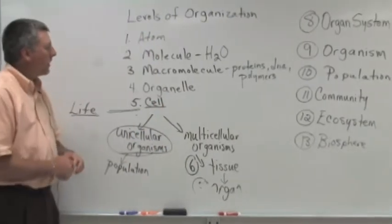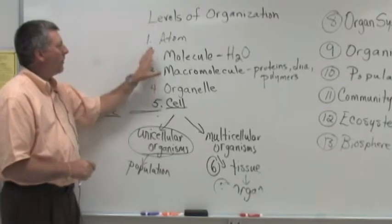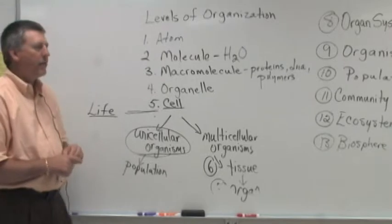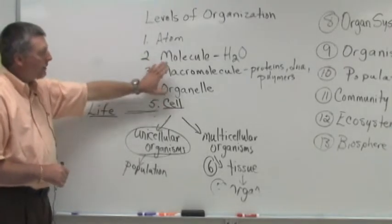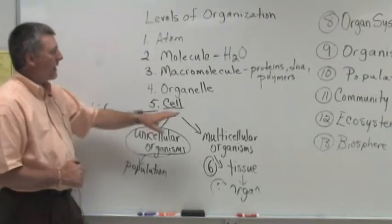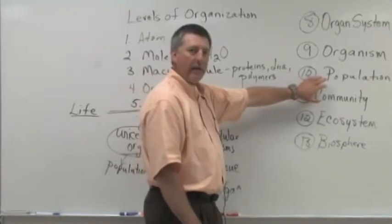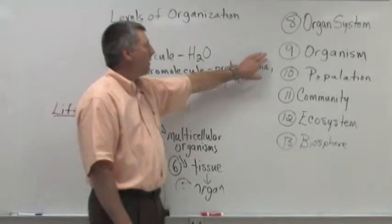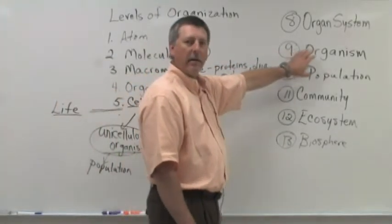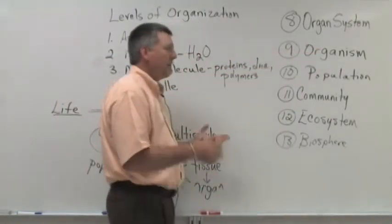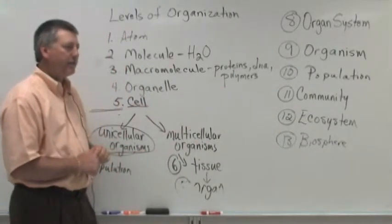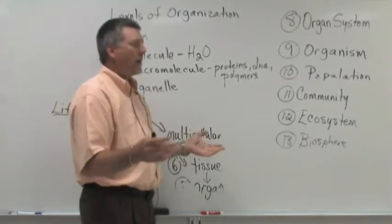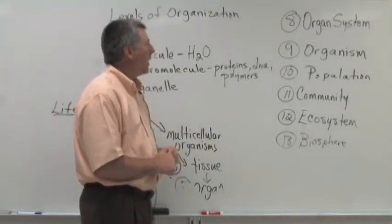So, levels of organization. We've gone from the smallest to the largest. There are different kinds of people that study life at many different levels. For example, there are population ecologists that are interested in studying populations. There are people that spend their entire life studying a particular organism. Maybe someone is studying a particular species of scorpion, and they spend their whole life studying that particular animal.